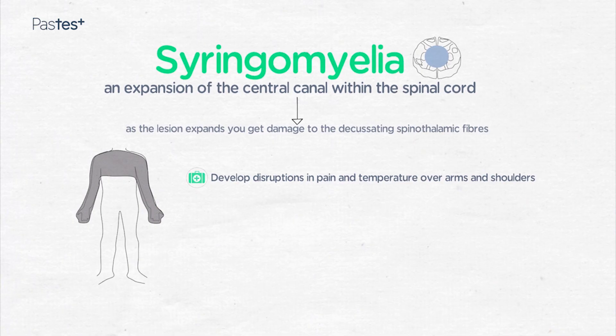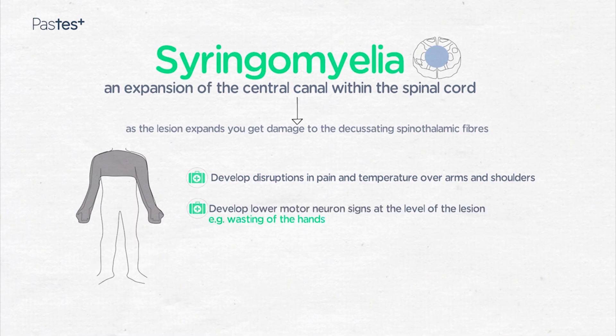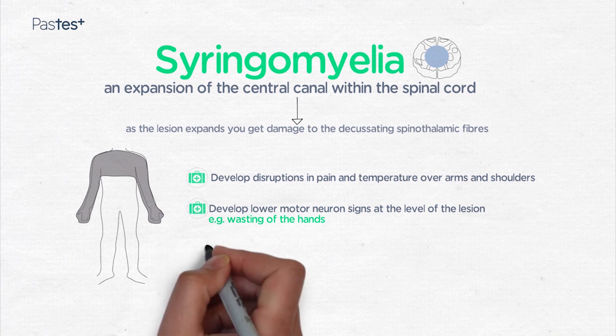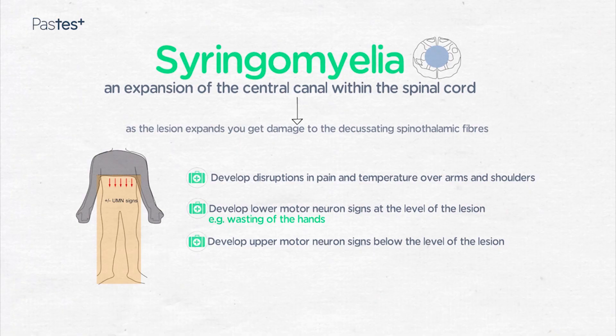Sometimes as the syrinx expands you start to get involvement of the anterior horns, which means that you see lower motor neuron signs such as wasting at the level of the lesion — for instance, in the hands. As the syrinx enlarges it can start to affect the corticospinal tracts, and that means that below the level of the lesion you may see upper motor neuron signs such as increased tone, brisk reflexes and up-going plantars.